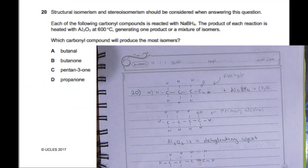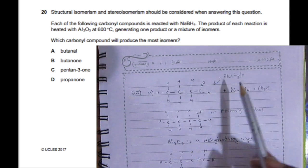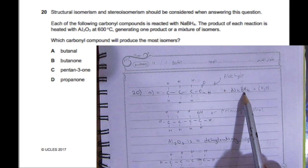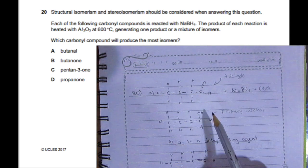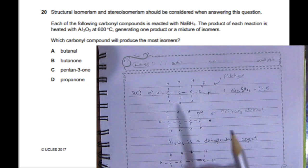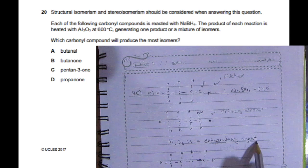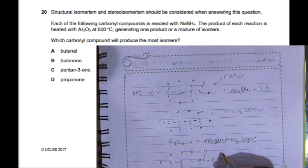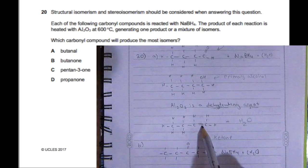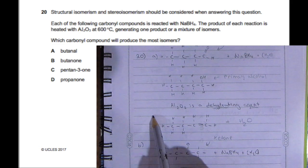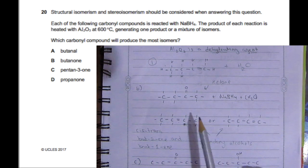Question 20: Structural isomerism and stereoisomerism should be considered. Each carbonyl compound is reacted with NaBH4, which reduces them, and then the product is heated with aluminum oxide. First I drew out butanal, which is an aldehyde. When it's reduced by NaBH4, it becomes a primary alcohol. Aldehydes become primary alcohols when reduced. When we use aluminum oxide, it's a dehydrating agent—it gets rid of water. We got rid of an OH and H, so it became an alkene with double bonds.